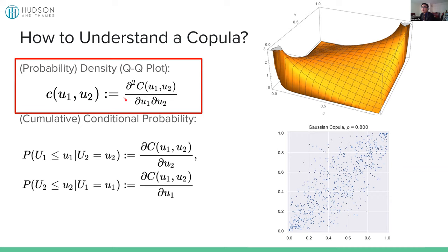Looking at the density plot in slices: if you let v equal 0.3, you can see some areas are very dense and others much less. If you fix u equal to 0.1, or fix v equal to 0.3, and look at the slices, you will see different shapes. Those conditional probabilities are the things we'll be using for pairs trading — technically, this is the only part you need to understand by heart to use copulas for pairs trading. The conditional probabilities will tell you the relative mispricings of the copula.